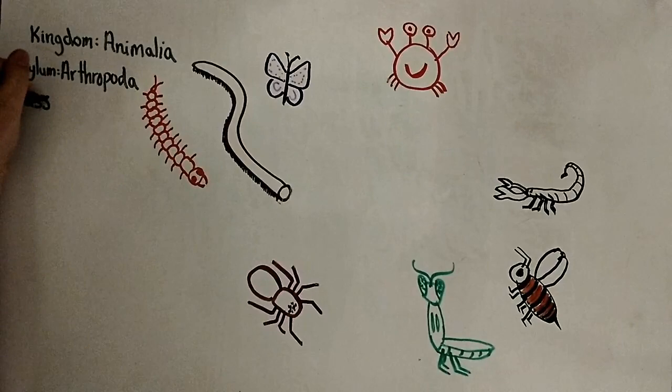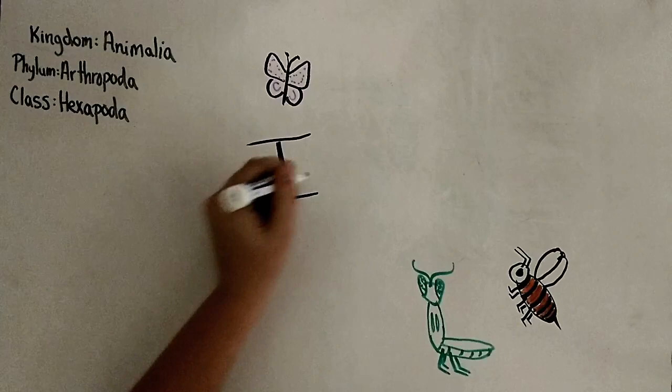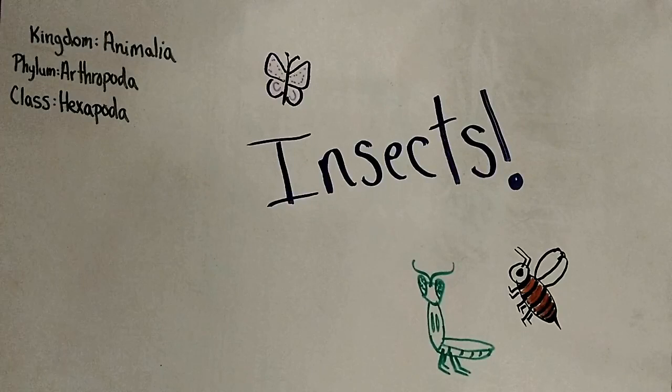Class Hexapoda — these are the insects. All of them have six legs, three body parts, and one pair of antennae. There are four more classifications that narrow it down past insects until you get to one species.